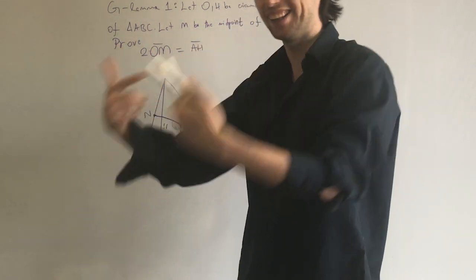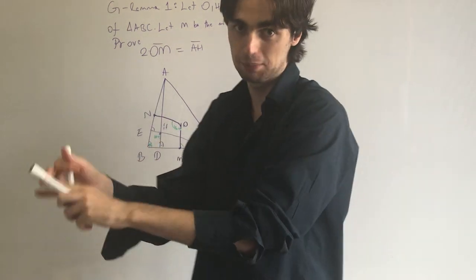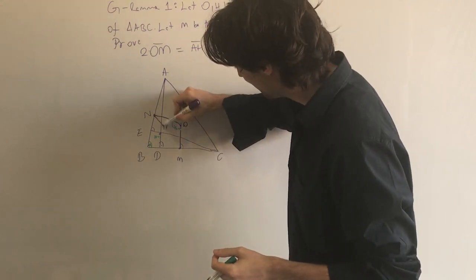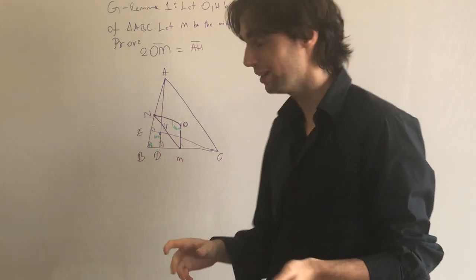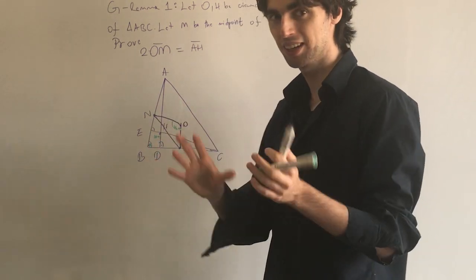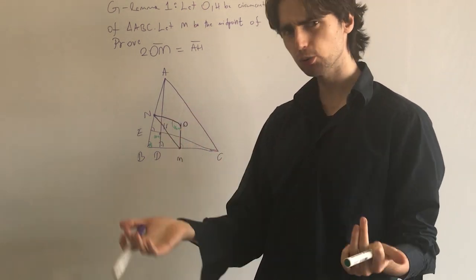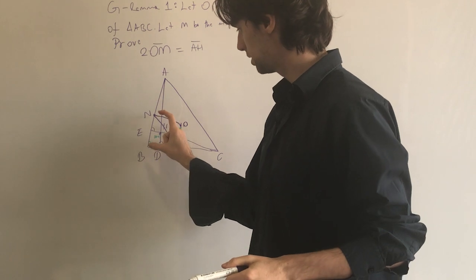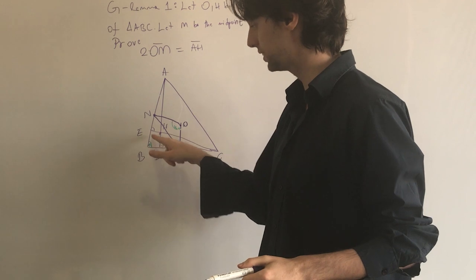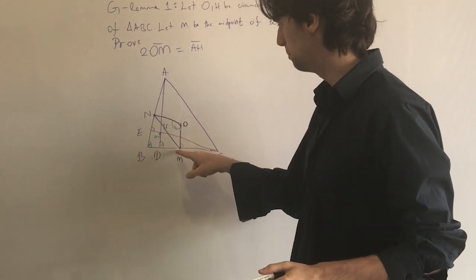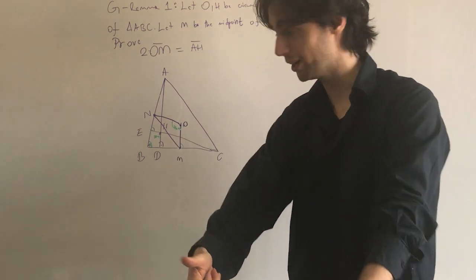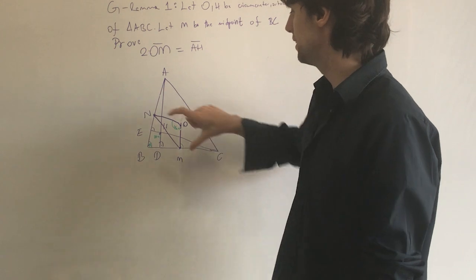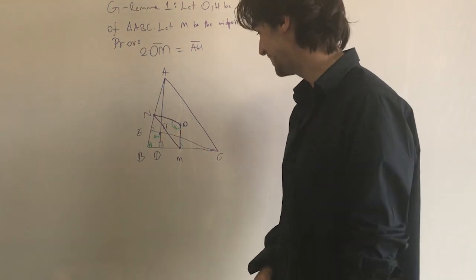Now let's think forwards. We want triangles AHC and MON to be similar. What do we know about MN? Because M is the midpoint of BC and N is the midpoint of AC, we have BM = ½BC and BN = ½BA. They share angle B, so triangle NBM is similar to triangle ABC by SAS. This means MN is half of AC and is also parallel to AC. So angle at M equals alpha and angle at N equals gamma.